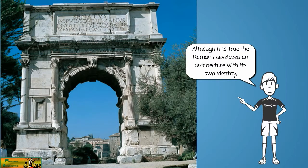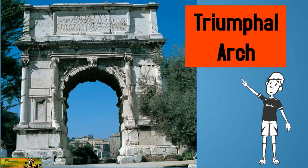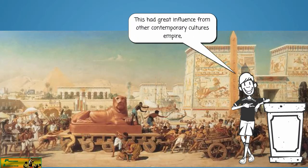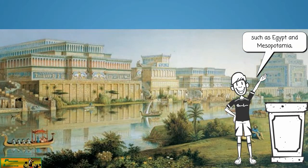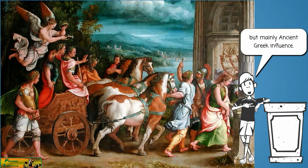Although it is true the Romans developed an architecture with its own identity. This had great influence from other contemporary cultures of the empire, such as Egypt and Mesopotamia, but mainly ancient Greek influence.